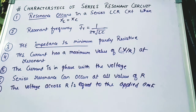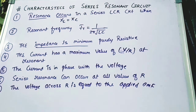Resonance only occurs in an LCR series arrangement; a purely R circuit cannot produce resonance. At resonance, the inductive reactance equals the capacitive reactance. The circuit has its maximum current value equal to V/R. The current and voltage are in phase, and the circuit acts as a purely resistive circuit. Series resonance can occur at all possible values of R, and the voltage across R equals the applied EMF.